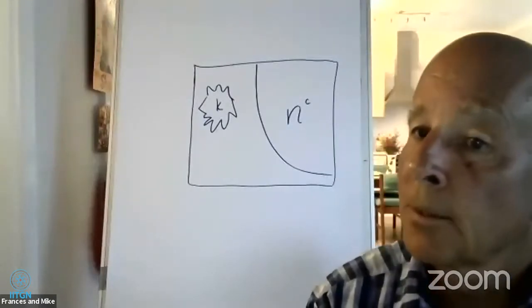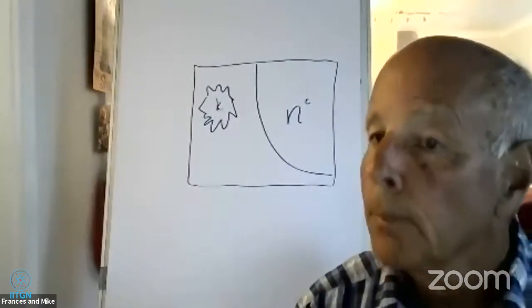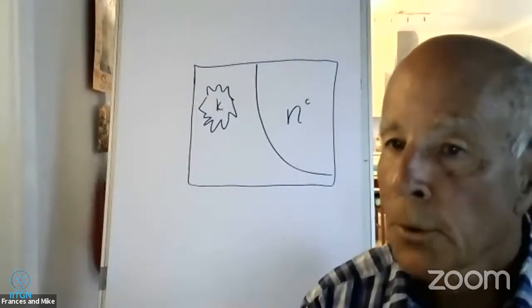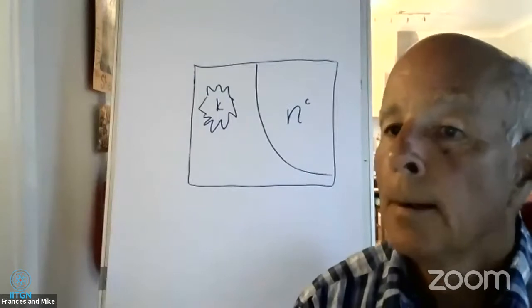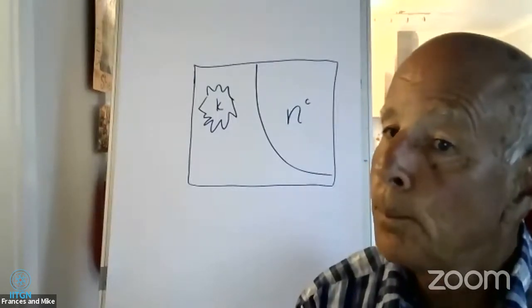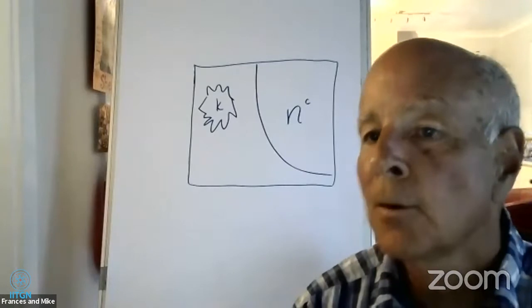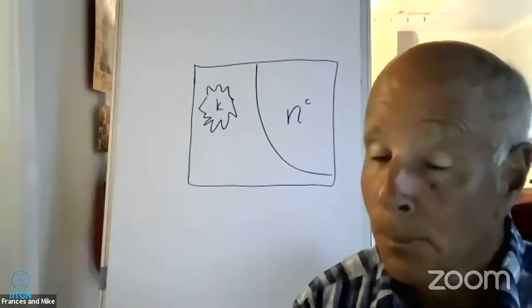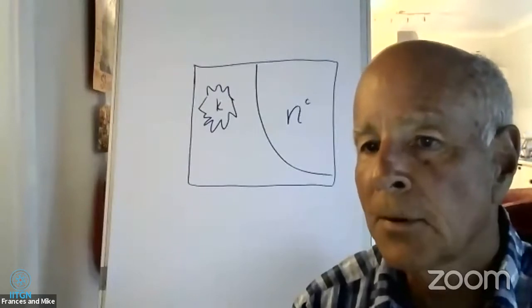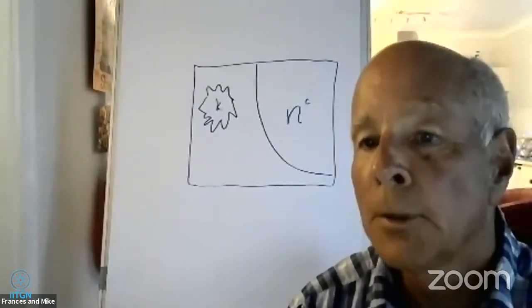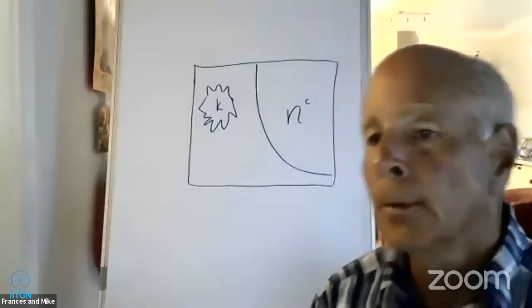When we think about the history of parameterized complexity, we need to think about the broad sweep of theoretical computer science, which began in the classical framework with the notion of one dimensional measurement, legal input size, worst case asymptotic polynomial time is the notion of the good. The tragedy and beauty of that initial framework is that almost everything turns out to be NP-complete.